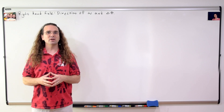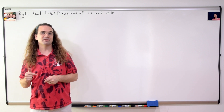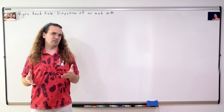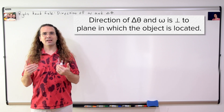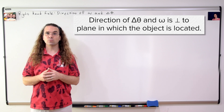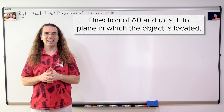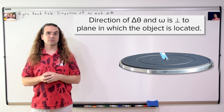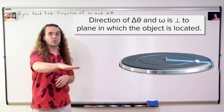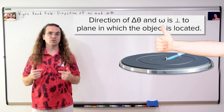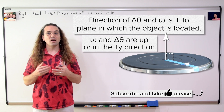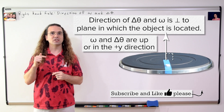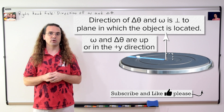Very nice everybody. I do want to remind everybody that the right hand rule gives the direction of the angular displacement and angular velocity of the turning object. One last thing which can be confusing for students: the direction of the angular displacement and angular velocity of a turning object is normal to the plane in which the object is located. This turntable is located on a horizontal plane, a plane which is parallel to the ground. The turntable has an angular velocity which, according to the right hand rule, is directed upwards. Up is at a 90 degree angle, or normal to the horizontal plane, which is why the direction given by the right hand rule is normal to the plane in which the object is located.